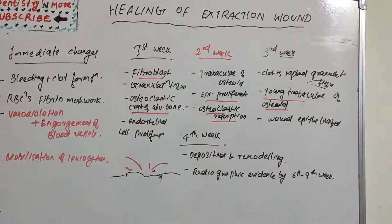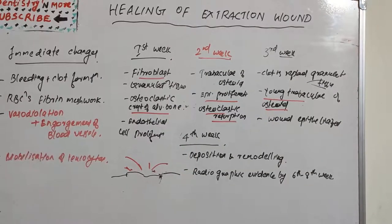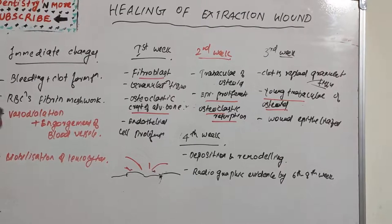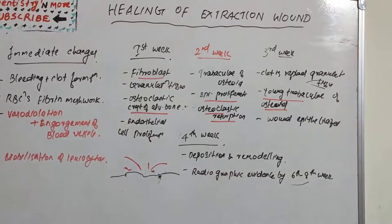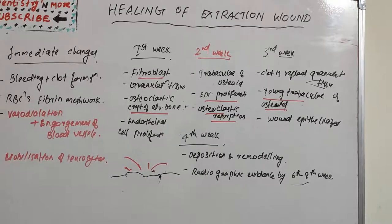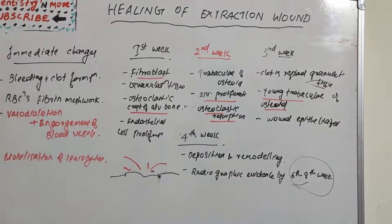In the fourth week, the wound is in the final stage of healing with continuous deposition and remodeling — that is, remodeling and resorption of the bone filling the alveolar socket. By around six to eight weeks post-extraction, we can see radiographic evidence of bone formation. Before that, even though bone formation is occurring, we won't get radiographic evidence.